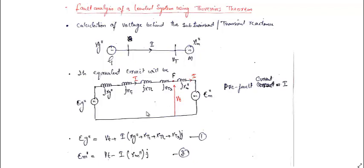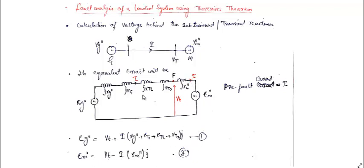Before the fault, this is the current flowing from generator to motor — we call this the pre-fault current. Vt is the pre-fault voltage at the bus to which the motor is connected. Using simple KVL we can relate Eg double dash and Em double dash to Vt. Eg double dash equals Vt plus I times (Xg double dash + XT1 + XTL + XT2), and Em double dash equals Vt minus I times Xm double dash.